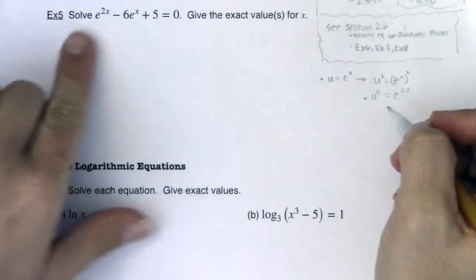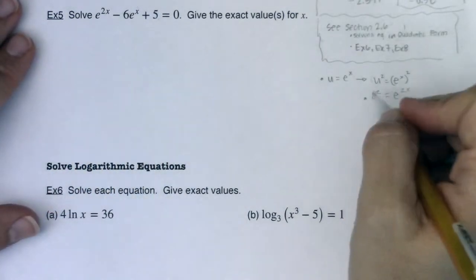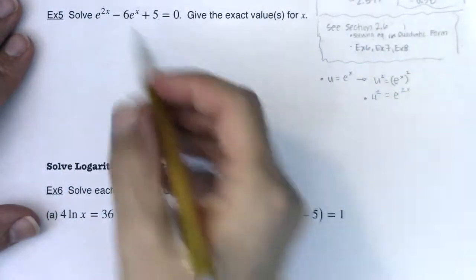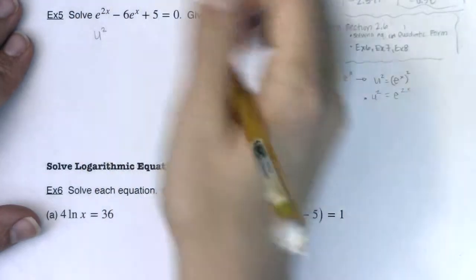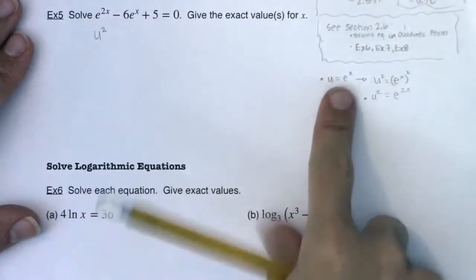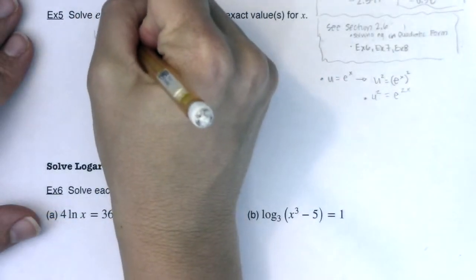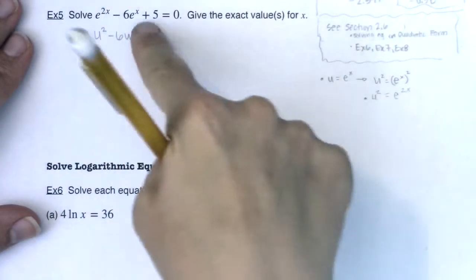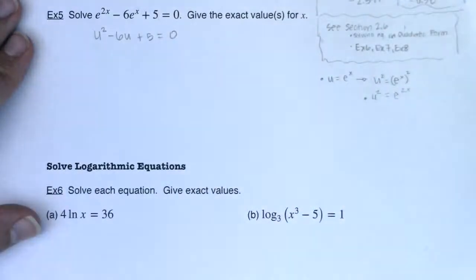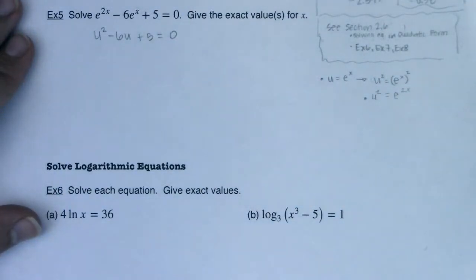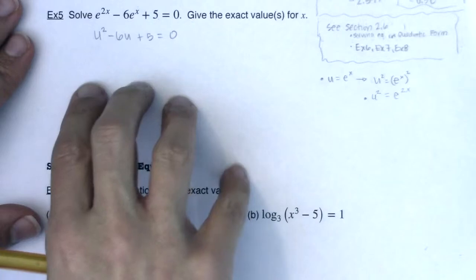So now let's rewrite this entire equation using u's. We're going to sub in u's for x. Instead of e to the 2x, I'm allowed to write u squared. And instead of 6e to the x, I'm allowed to write minus 6u. And plus 5, this has no x's in it, so I'm just going to keep that as plus 5. It's a constant.